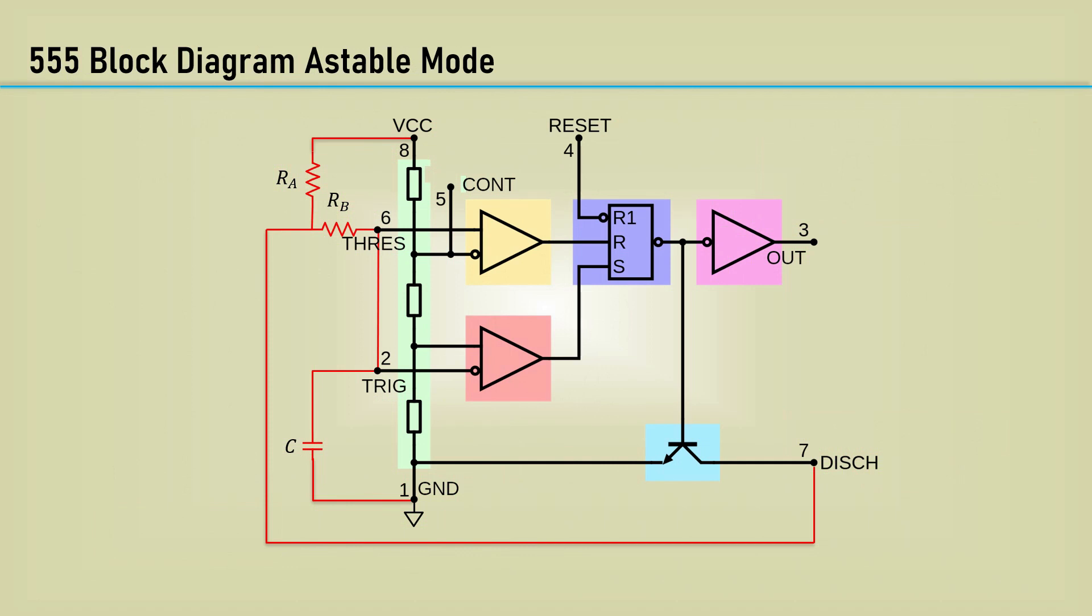Here's the diagram for an astable operation. The capacitor charges through the series combination of Ra and Rb. It discharges through Rb. The capacitor voltage oscillates between 1/3 VCC and 2/3 VCC. To calculate the frequency of operation, we must know the time that it takes to charge and discharge the capacitor. The data book equation for the time the waveform is high is that mysterious 0.693 number. Same for the time the waveform is low. The time of the period, capital T, is the sum of those times.